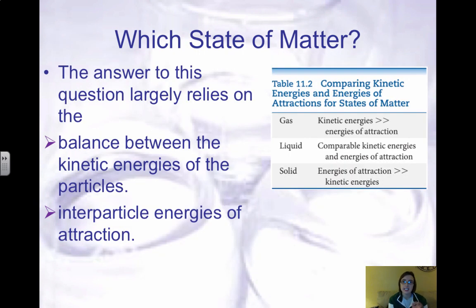When we are deciding which state of matter something is, we can look at two things: the kinetic energy and the energy between the particles, the energy of attraction. The kinetic energies, like we talked about in the gases unit, are always based on temperature. The kinetic energies tend to keep the particles apart and keep them moving, where the interparticle attractions tend to draw the particles together and that slows them down.